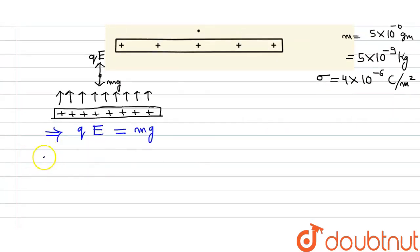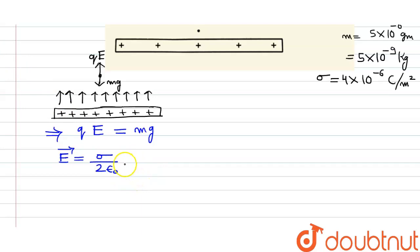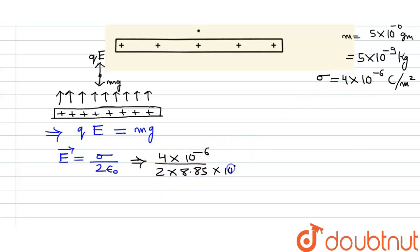Here, g is gravitational acceleration and E is the electric field. The electric field due to a charge sheet is given by E = σ / (2ε₀), where ε₀ is the permittivity of free space and σ is the charge density. Substituting values: E = (4×10⁻⁶) / (2 × 8.85×10⁻¹²).